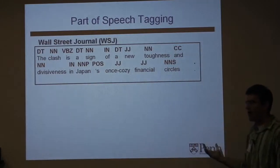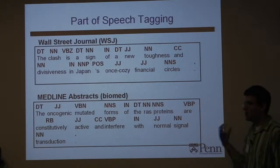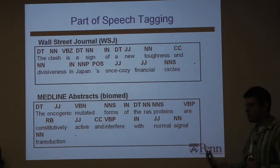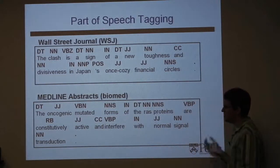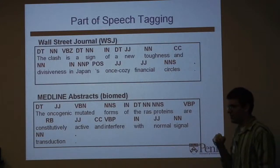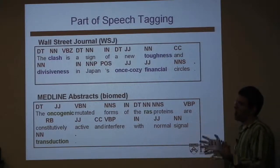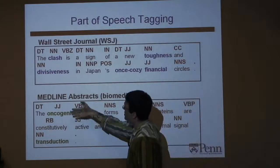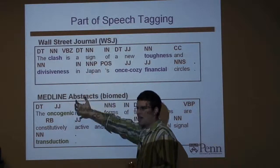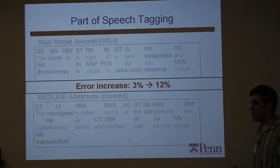They get sentences like: 'The oncogenic mutated forms of the RAS proteins are constitutively active and interfere with normal signal transduction.' The vocabulary really changes a lot. Words highlighted are those occurring five times or more frequently in one domain than the other — for instance, 'oncogenic' almost never occurs in the Wall Street Journal. If you train a state-of-the-art part-of-speech tagger on the Wall Street Journal and test it on MEDLINE, the error quadruples.